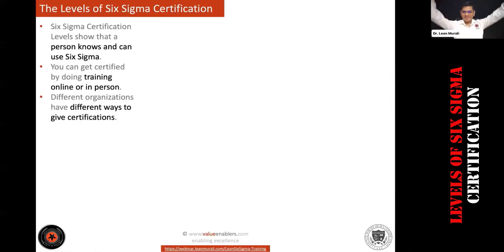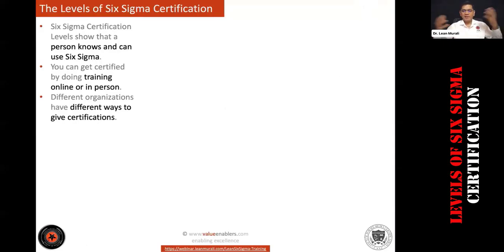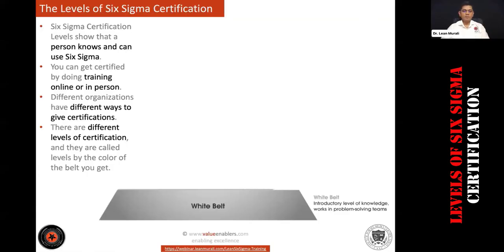This body of knowledge study guide has been covered across all 50 modules in the form of presentations. Once you cover all 50 modules, you will have more than a thousand slides of presentations — that's the amount of knowledge you will have. There are different levels of certification, and they are called by the color of the belt. Dr. Michael Harry did the fantastic job of creating these belts and a structure to it.